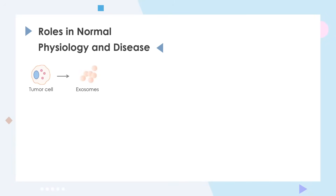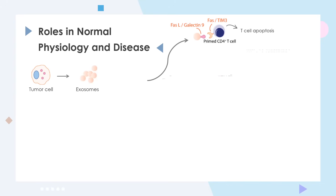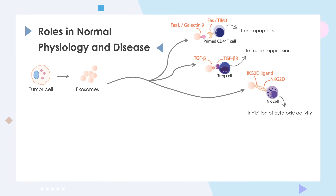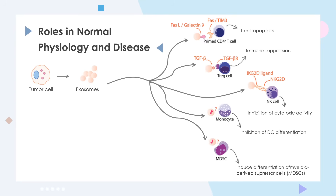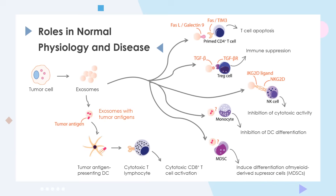The figure below shows exosomes from tumor cells, which can be immunosuppressive or activating. These exosomes exert immunosuppressive activities on T cells through carrying ligands: FAS-L and galectin-9 binding to FAS and TIM-3 on CD4+ activated T cells promotes T cell apoptosis. TGF-beta binds to corresponding receptors on regulatory T cells, resulting in immunosuppression. The NKG2D ligand binds to NKG2D on NK cells, thereby inhibiting cytotoxic activity. Others inhibit differentiation of DCs or induce differentiation of MDSCs. Finally, tumor cell-derived exosomes also carry tumor antigens that can trigger anti-tumor responses.